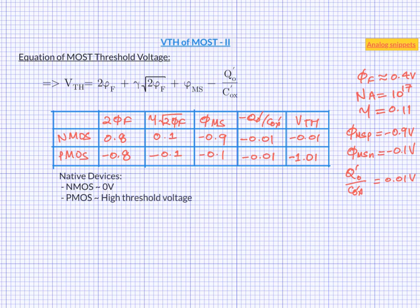These devices are called native devices. If you see your technology device list, you may find NVT or 0VT n-mos transistors. This is what that is. High threshold voltage p-mos is practically useless. So, it is not included in standard device offering.